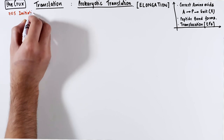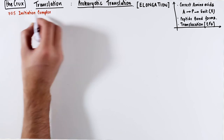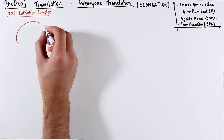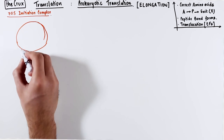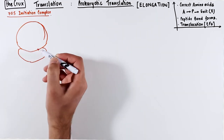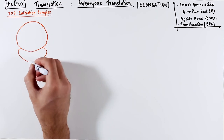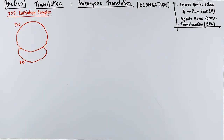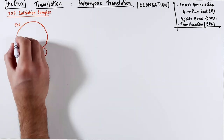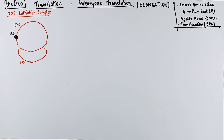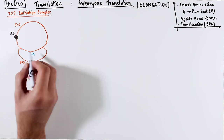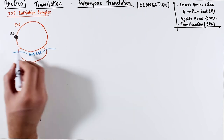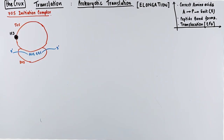We start where we left off in the initiation stage, which is the 70S initiation complex. If you haven't watched the initiation video, I highly recommend you watch it first. The link for the initiation video is down in the description as well as in the cards on the top right. In this 70S complex, we saw that IF3, initiation factor 3, remains paired with the 50S subunit.